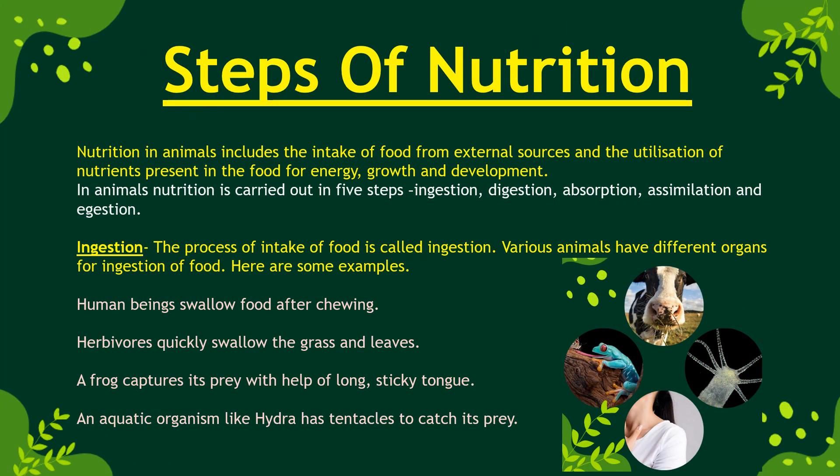Nutrition in animals includes the intake of food from external sources and the utilization of nutrients for energy, growth, and development. In animals, nutrition is carried out in five steps: first is ingestion, second is digestion, third is absorption, fourth is assimilation, and fifth is egestion. These five steps complete the digestion process.